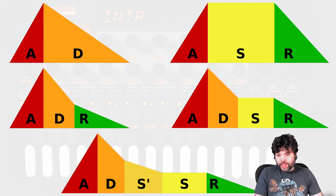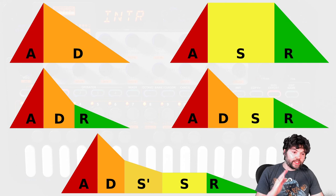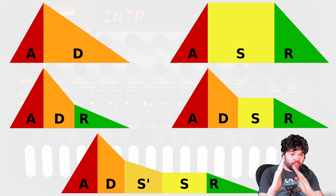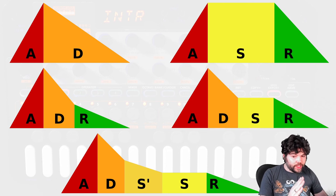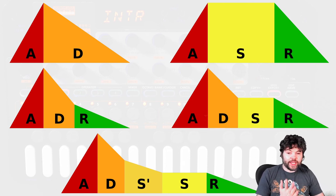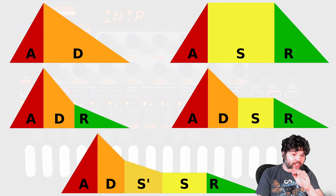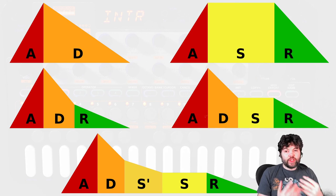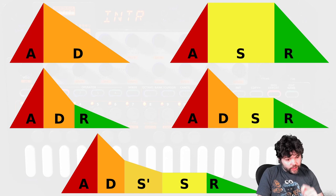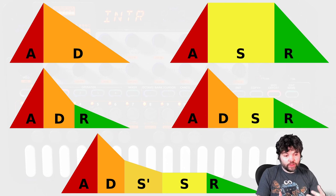The next envelope is the ADR envelope. It attacks to full amplitude and decays over a certain period of time — the decay continues all the way to zero unless you release the key, at which point it enters the release stage. This is often used for plucky sounds. More commonly you have a shallow decay phase and a sharp release phase — like a piano where a string is struck and rings, and when you release the key, a damper dampens the sound, causing it to stop.